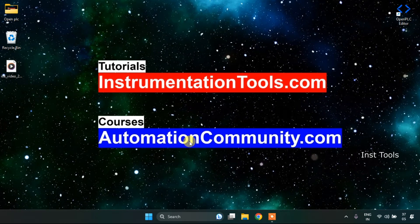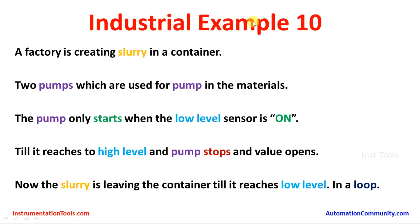In this video we are going to see an example. Let's look at industrial example 10. A factory is creating slurry in a container. Two pumps are used to pump in the materials. The pump only starts when the low-level sensor is on, until it reaches the high level, then the pump stops and the valve opens. The slurry leaves the container until it reaches low level, in a loop. Let's head over to the OpenPLC editor and draw the ladder diagram for the given problem.